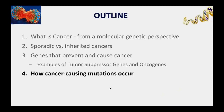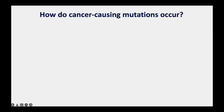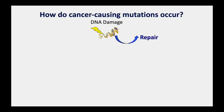We've talked about sporadic versus inherited cancers and the types of genes that cause cancer—tumor suppressor genes and oncogenes—and their roles in cell proliferation and cell death. Now I want to discuss how cancer-causing mutations occur. In a nutshell, they result from the accumulation of DNA damage.